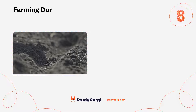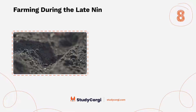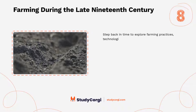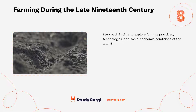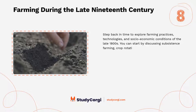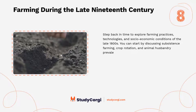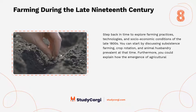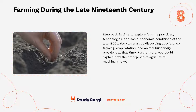Farming during the late 19th century. Step back in time to explore farming practices, technologies, and socio-economic conditions of the late 1800s. You can start by discussing subsistence farming, crop rotation, and animal husbandry prevalent at that time. Furthermore, you could explain how the emergence of agricultural machinery revolutionized farming.